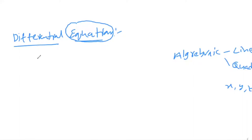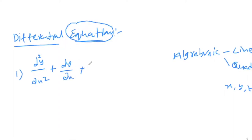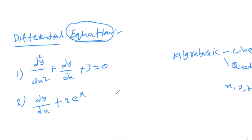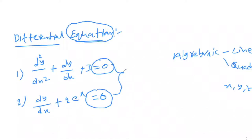For example, I am taking: d²y/dx² + dy/dx + 3 = 0. The second one is: dy/dx + 2eˣ = 0. Both of these are equal to zero, so we can say that both are equations.